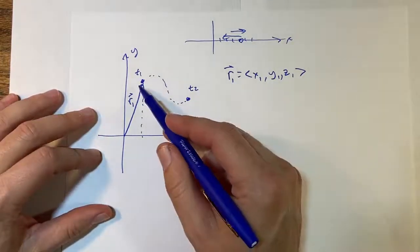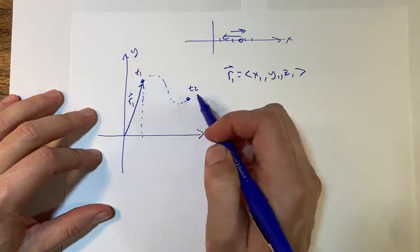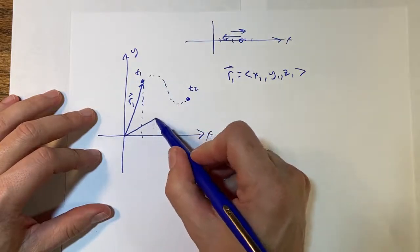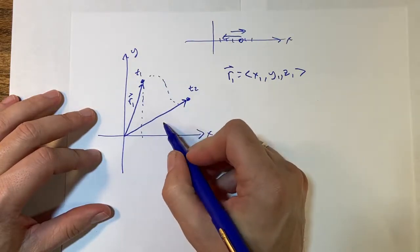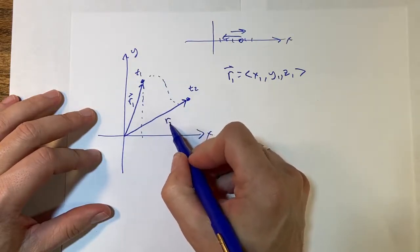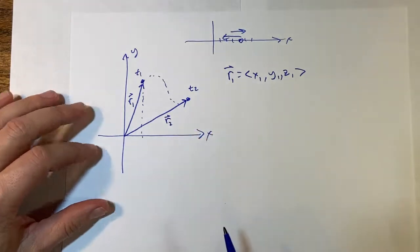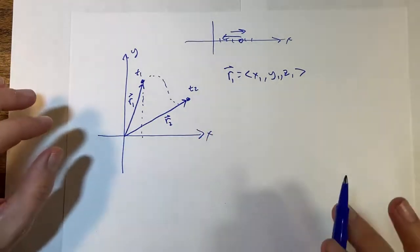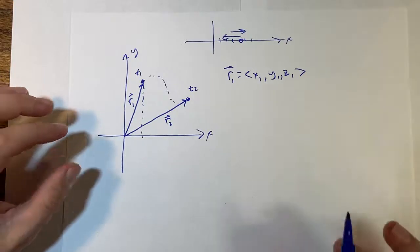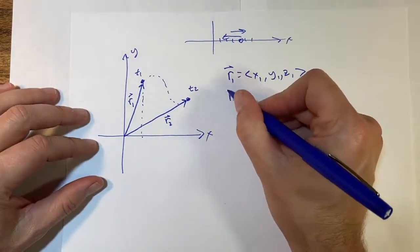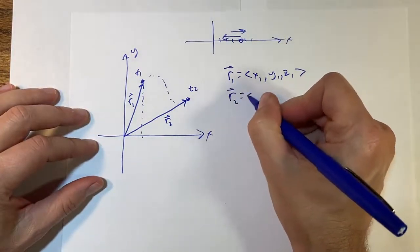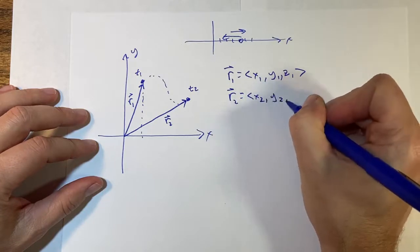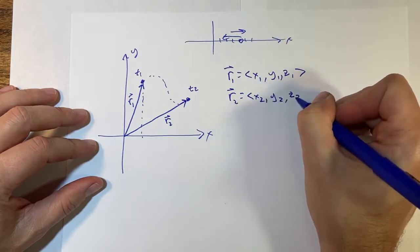So this thing moves along this path and later ends up over here at — you guessed it — r2. I know it looks complicated, but it's not. So r2 equals (x2, y2, z2).